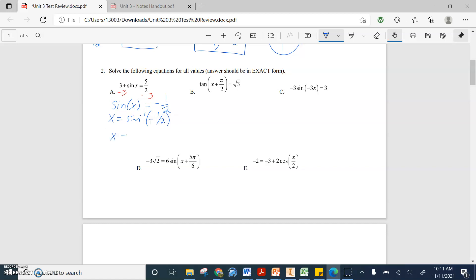And we get x equals, well, sine is equal to negative one half at seven pi over six, and eleven pi over six.